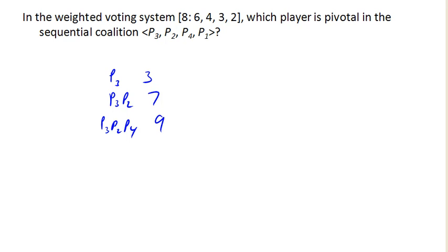And so the pivotal player was P4. Them joining the coalition got it to reach quota.